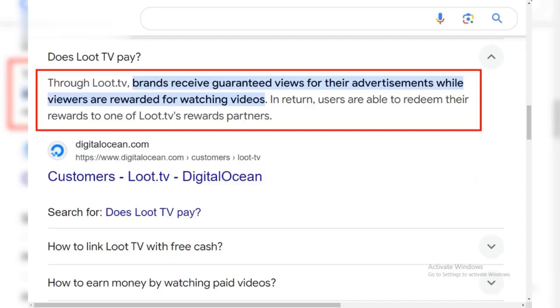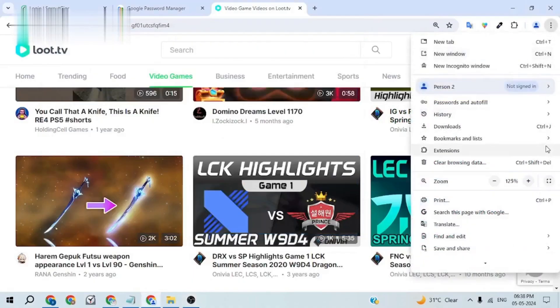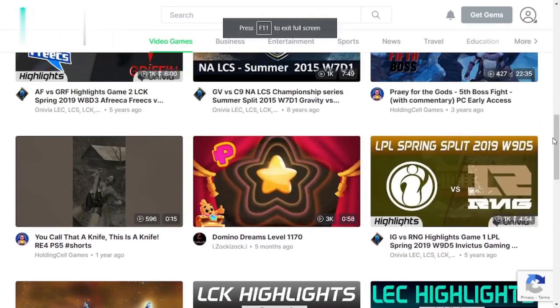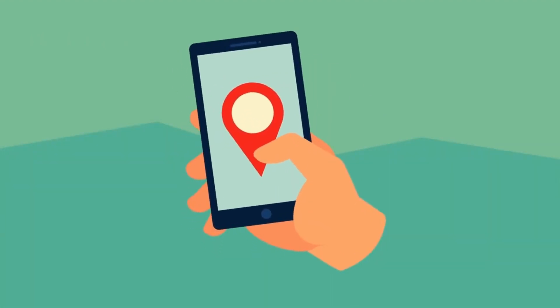Step 3. Watch and earn. Watching videos is straightforward. Just pick a video, watch it with the ad, it's important, and earn points. The amount you earn depends on your location.